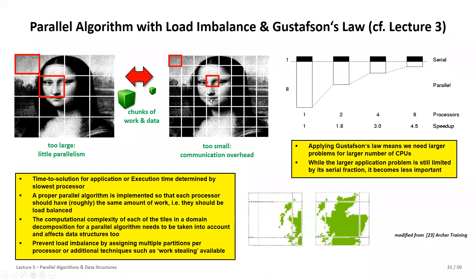A proper parallel algorithm must account for this. The total execution time is determined by the slowest processor — it doesn't help if most processors finish quickly if one is still working. They're all in the same boat. You have a proper parallel algorithm only if work is equally distributed, which is not easy to achieve as a parallel developer, since it requires approximation schemes of the data sets and depends on the inherent data structures and application domain.